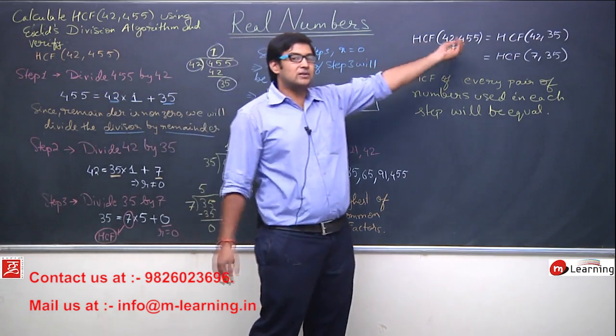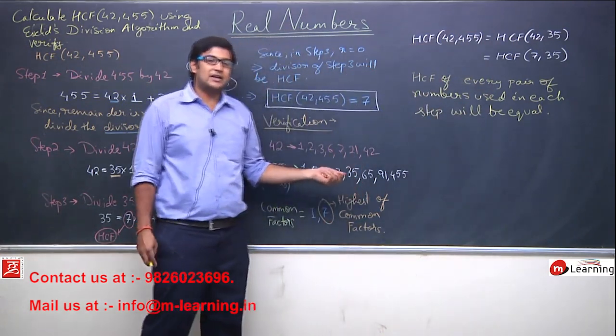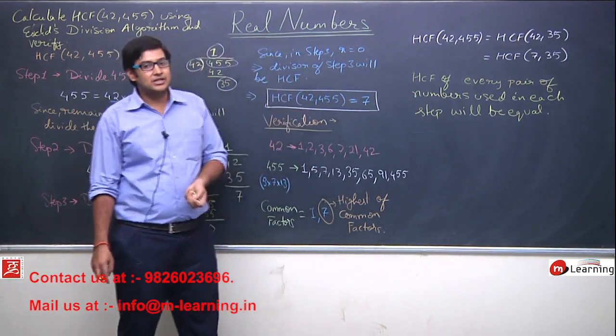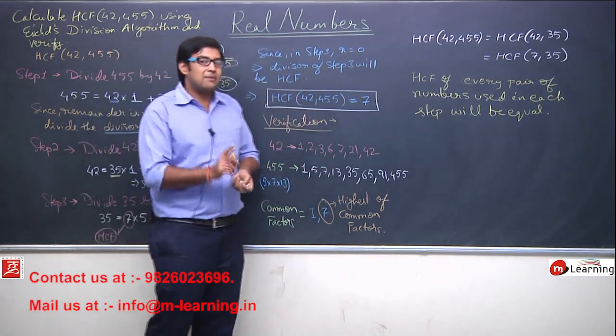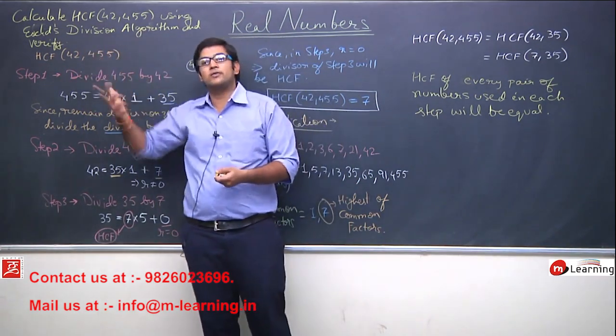ye algorithm, badi aasani se applicable ho jata hai. So, humne verify bhi kar liya, humne algorithm method laga ke bhi dekh liya, ab hum isi hi apply karte hai, aur bade numbers pe, abhi toh humne chote number liya 42 or 455.